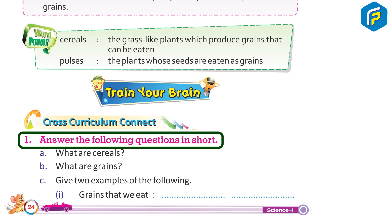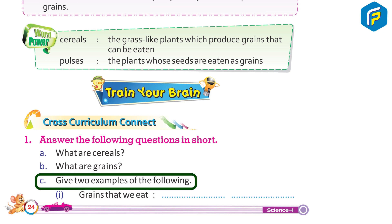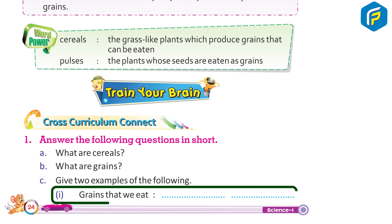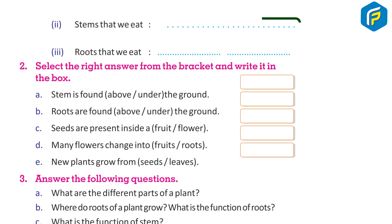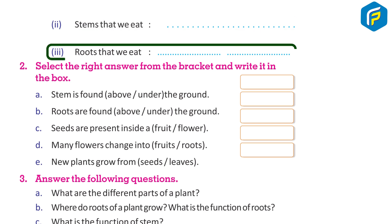Answer the following questions in short. A. What are cereals? B. What are grains? C. Give two examples of the following: 1. Grains that we eat. 2. Stems that we eat. 3. Roots that we eat.